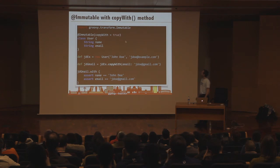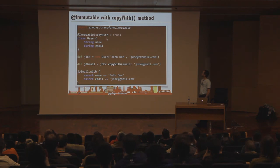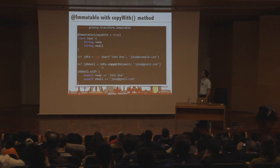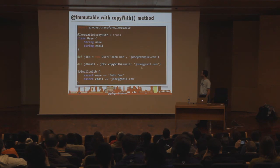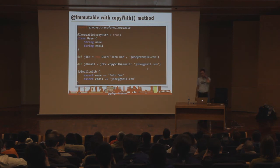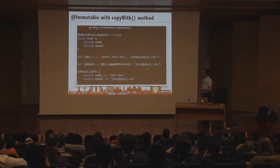We have a new parameter for the @Immutable transformation: 'copyWith', which allows you to copy an existing immutable instance. Here, I've got a John Doe user, and then I create a new user with copyWith, changing only the email. You can check that the name is still John Doe but the email is the new address. Since immutable objects can't be updated, you have to create a new one — copyWith makes that very easy.